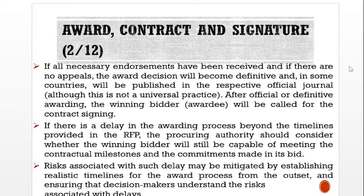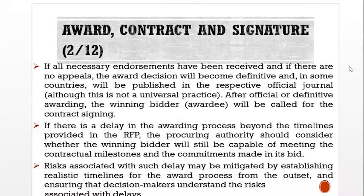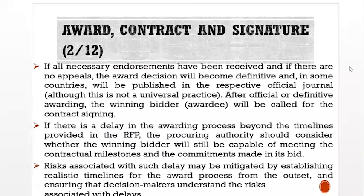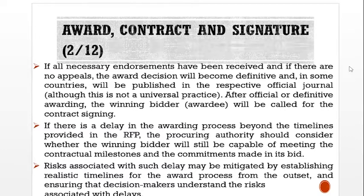If all necessary endorsements have been received and there are no appeals, the award decision will become definitive and in some countries will be published in the respective official journal. After official or definitive awarding, the winning bidder will be called for the contract signing. If there is a delay in the awarding process beyond the timelines provided in the RFP, the procuring authority should consider whether the winning bidder will still be capable of meeting contractual milestones. Risk associated with delay may be mitigated by establishing realistic timelines from the outset and ensuring that decision makers understand the risk.